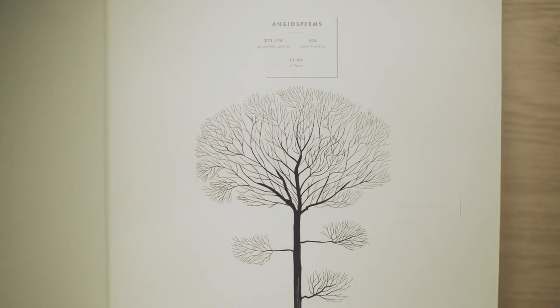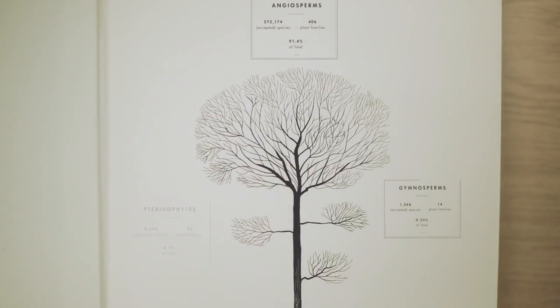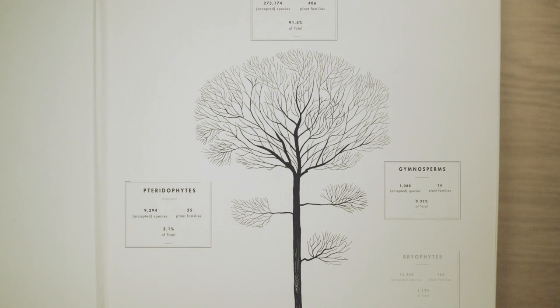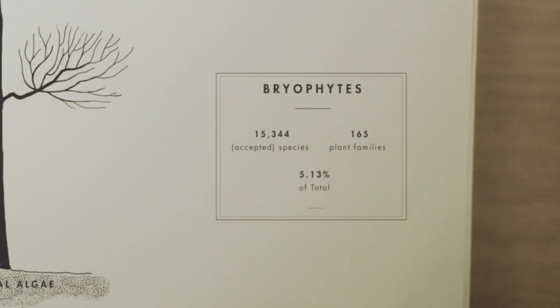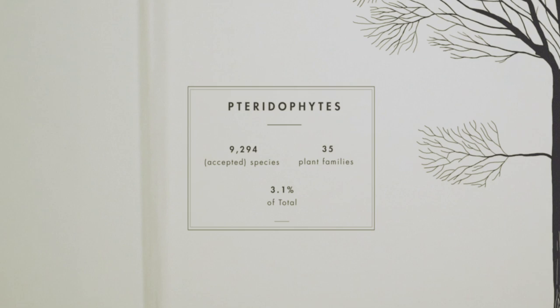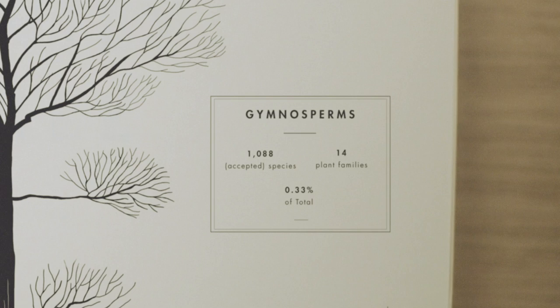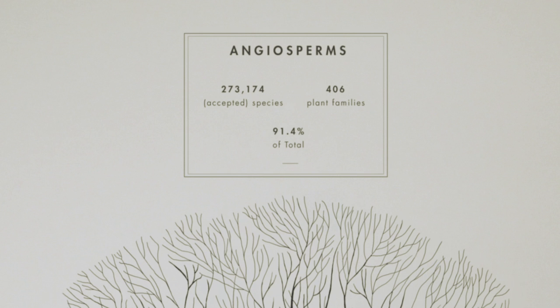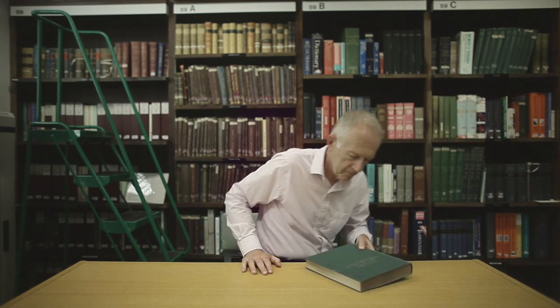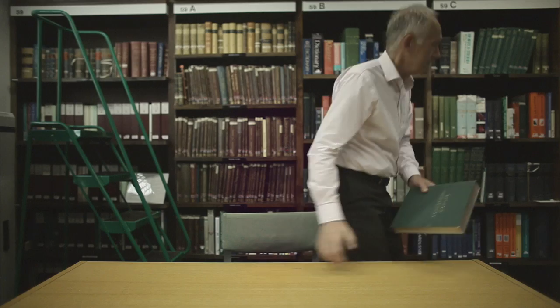The plant family tree gives us a framework for asking the really important questions about how our ecosystems function. It's those connections that tell us most of what we want to know about the evolution of life — not just plants, but the other things that depend upon plants, which is everything. The evolutionary tree is a great achievement — a tool for the rest of science and the rest of humanity. The process is now 95% complete, so the story is pretty well told.